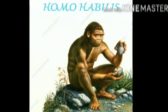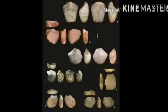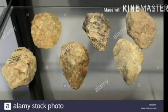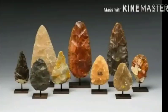Now I will explain in Tamil about Lower Paleolithic Culture. Homo habilis and Homo erectus are the key species. The tools demonstrate cognitive skills.